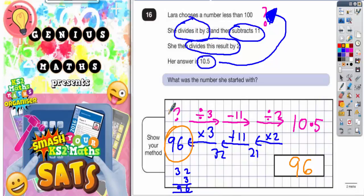It's a good idea to go back to the question mark, call it 96, and work it back through going forwards to see if you get 10.5. 96 divided by 3: let's double-check. 3 into 9 goes 3 times, 3 into 6 goes twice. So that would be 32.